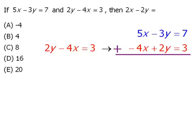5x plus negative 4x is equal to x. And negative 3y plus 2y is equal to negative y. Also, 7 plus 3 is equal to 10.